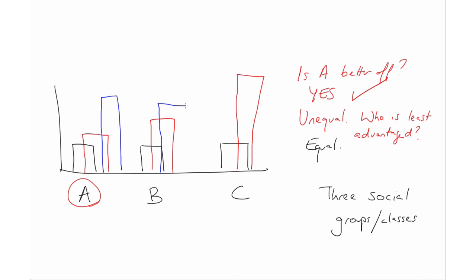Now consider a third distribution, the blue distribution, which is again unequal. And this time, group A does very well indeed.